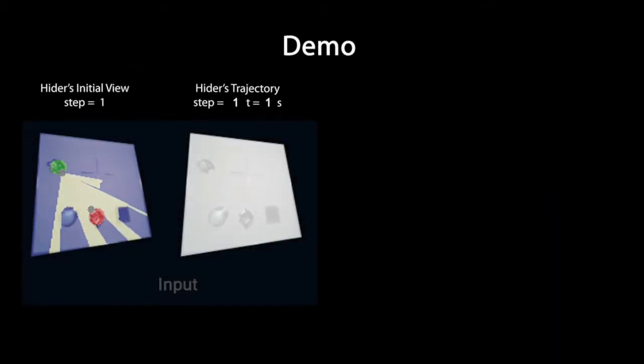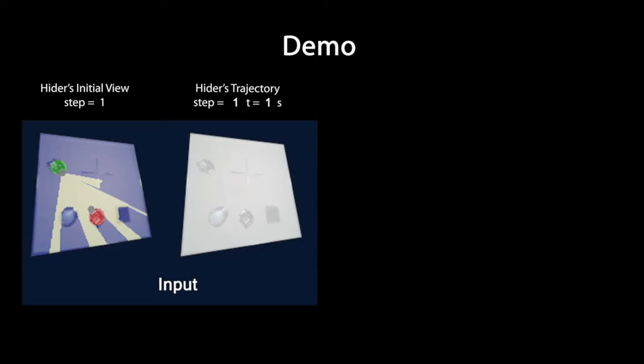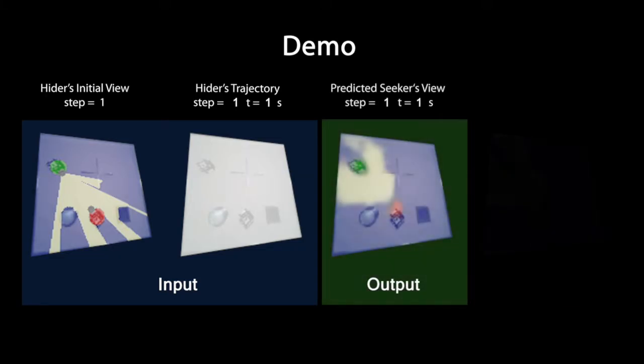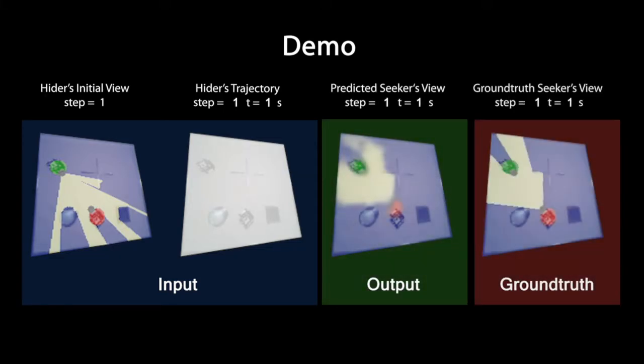Meanwhile, here we show our learning robot, the hider. Before executing any actions in the real world, the hider proposes an action sequence and infers the future possible views of the seeker's perspective along all points of the proposed plan. These predictions can extend to 100 steps into the future solely based on its initial observations.